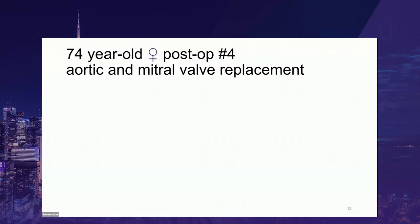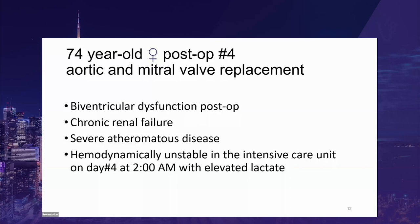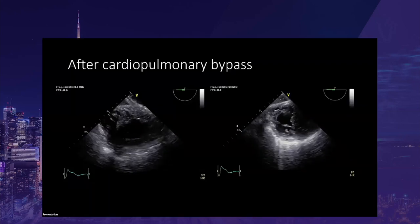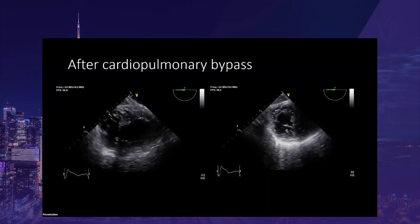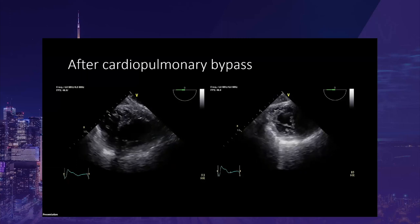The second case is a 74-year-old woman, post-op day four after aortic and mitral valve replacement. She had pre-existing biventricular dysfunction, chronic renal failure, vascular disease, and in the operating room was documented to have severe grade five atheromatous disease. On the fourth day in the ICU, she became very unstable at two in the morning with very high lactate. The TEE showed left ventricular dysfunction and also right ventricular dysfunction on the transgastric view after cardiopulmonary bypass.